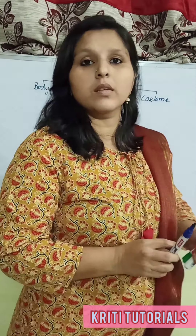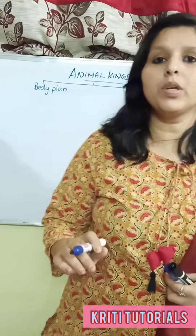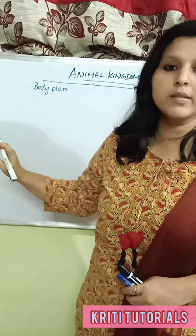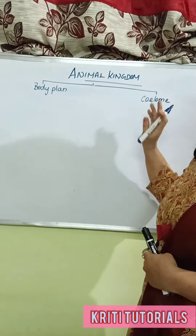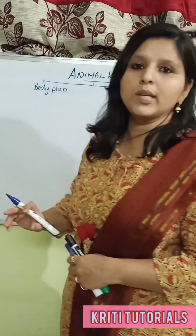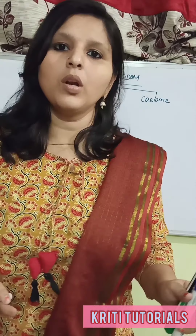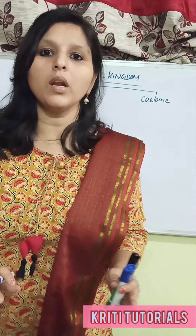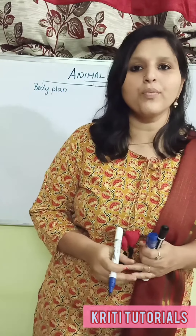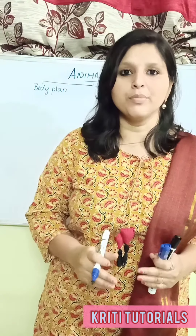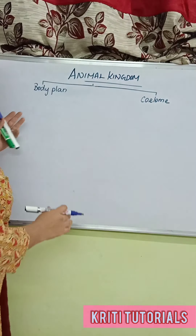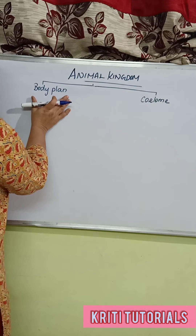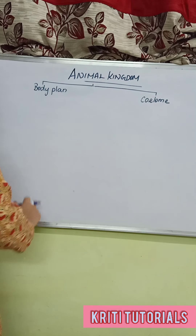Let us discuss the two animal parameters. The first one is the body plan and the other one is the coelom. In the previous session, we have seen about the habitat of the species, levels of organization, and the symmetry. But today in this class, we are going to see about the body plan.